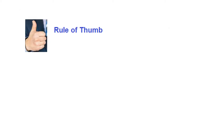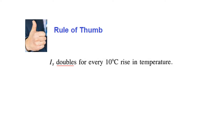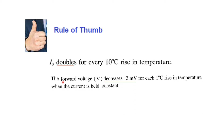Now let's learn two rules of thumb followed by Mr. Bogart. First, the saturation current IS doubles for every 10 degree Celsius rise in temperature. Second, the forward voltage V decreases 2 millivolts for each one degree rise in temperature when the current is held constant. Temperature has a significant effect here.